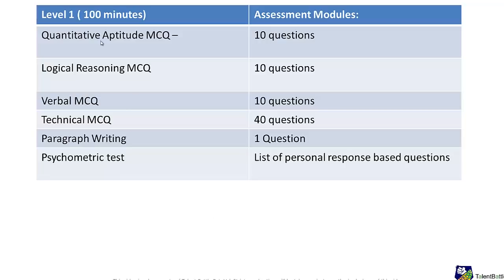The first section is quantitative aptitude — 10 questions in 10 minutes. The second part is logical reasoning MCQs — again 10 questions in 10 minutes. Then verbal ability — 10 questions in 10 minutes. Next, there are 40 technical MCQs, which are programming-based. After that, there is a writing skills section where one question or paragraph topic is provided to you, followed by a psychometric test with various personality-based questions.